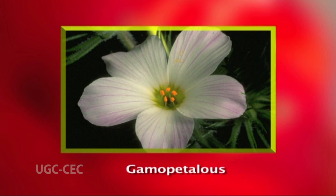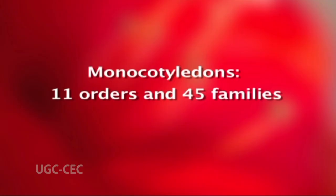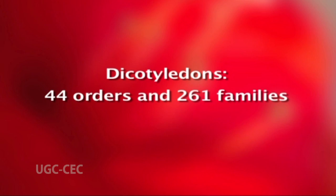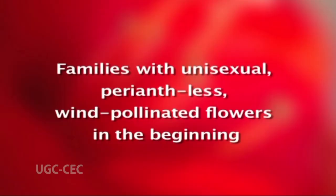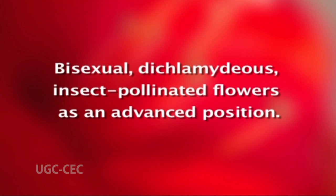Monochlamidae is completely abolished as such, and families are distributed in the large series Archichlamydeae. The Engler and Prantl system dominates over all previous natural systems of classification. It is based on increasing complexity of plant parts, particularly the essential whorls of flowers. The gamopetalous condition is considered more advanced than the polypetalous condition. Indefinite numbers of stamens and carpels are primitive to a definite number. Monocotyledons are classified into 11 orders and 45 families, whereas dicotyledons are classified into 44 orders and 261 families.